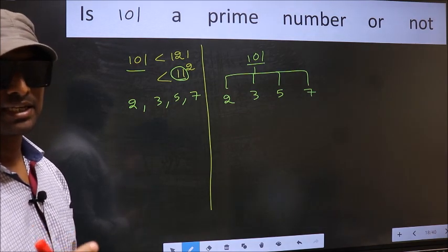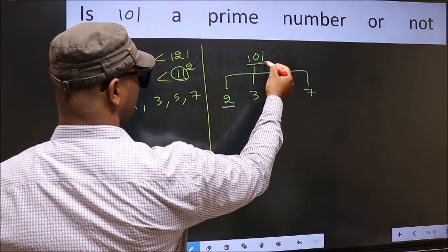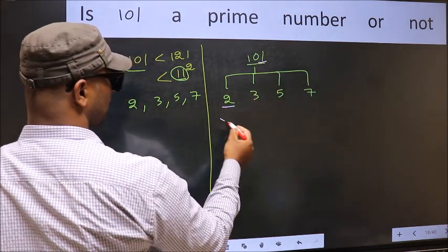Let us check with the divisibility. Starting with 2. Last digit 1 not even, so not divisible by 2.